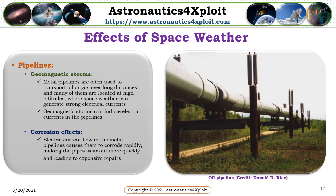Pipelines. Metal pipelines are often used to transport oil or gas over very long distances, and many of them are located at high latitudes where space weather can generate strong electrical currents. Geomagnetic storms can induce electric currents in pipelines. Electric current flow in the metal pipelines causes them to corrode rapidly, making the pipes wear out more quickly, and this can lead to expensive repairs.